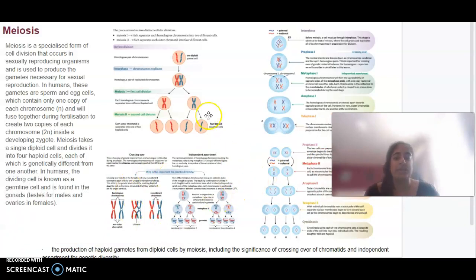There are two important things to note with meiosis: crossing over and independent assortment. This is what is going to be causing our genetic diversity - what's going to allow for each of our daughter cells at the end to have differences between them.